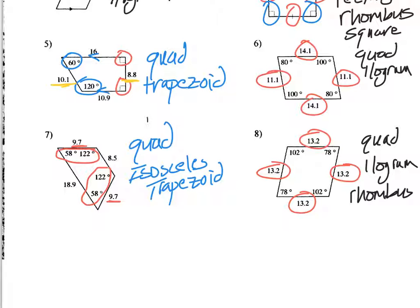Okay, so being able to identify the quadrilaterals and what type they are based on their characteristics. Thanks. Bye.